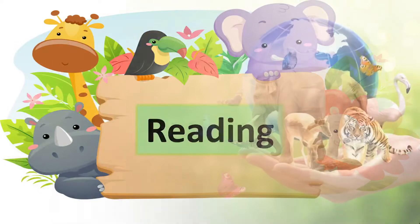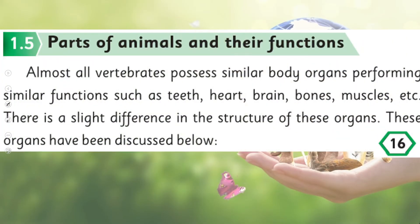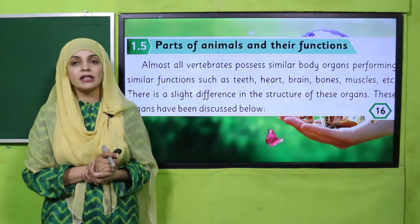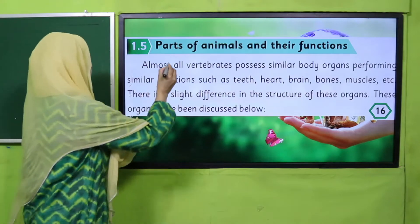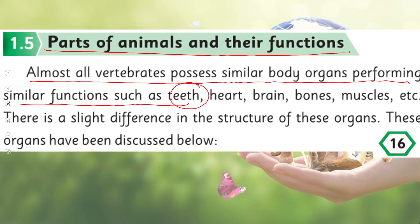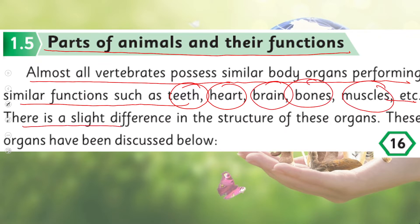Now is the time for reading. Let's open page number 16 in the Science 4 book. Put your fingers where I read: 'Parts of Animals and Their Functions — Almost all vertebrates possess similar body organs performing similar functions, such as teeth, heart, brain, bones, muscles, etc. There is a slight difference in their structure, but these organs have been discussed below.'